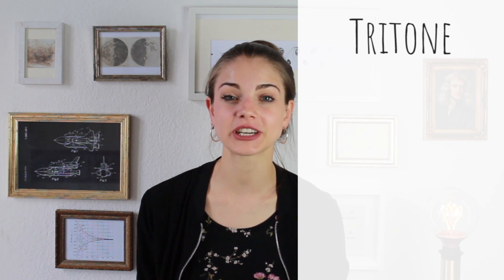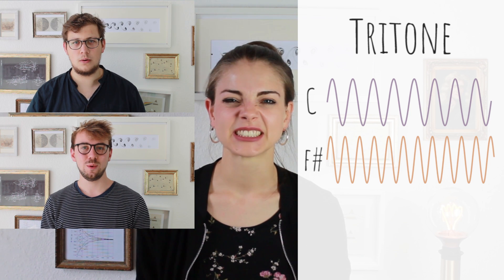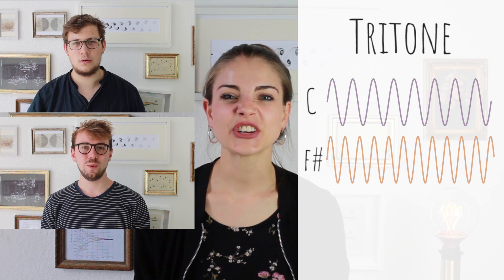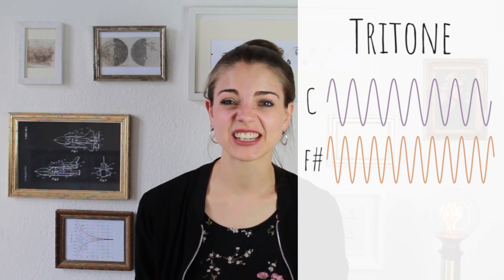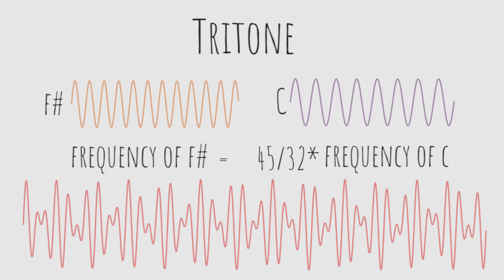One example of a wave pattern that is not so regular is that of a tritone — formed, for example, with a C and an F sharp. You hear immediately that it doesn't sound so nice. The frequency ratio of these notes is 45 to 32, meaning the pattern only repeats every 32 periods of C or every 45 periods of F sharp, and that explains the not-so-pleasant-sounding interval.